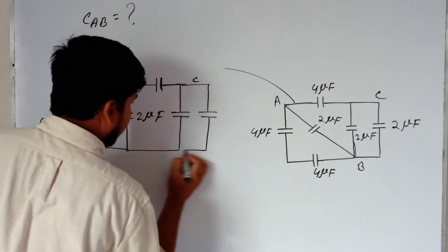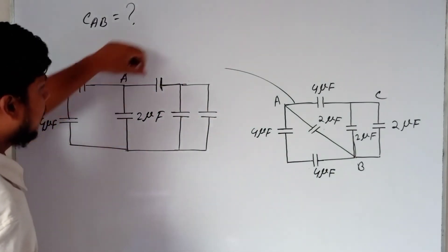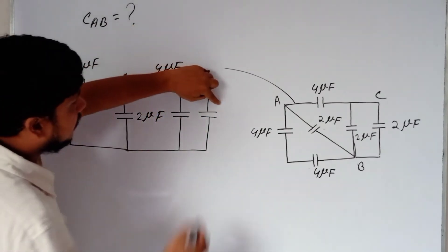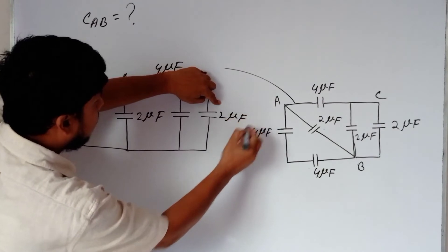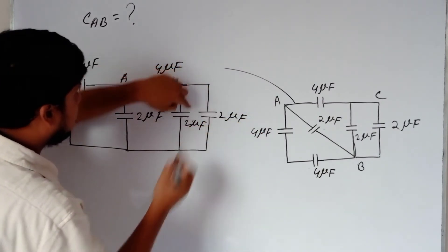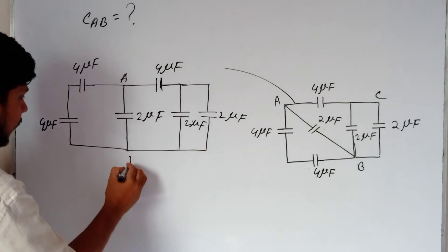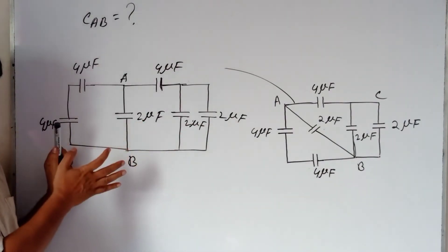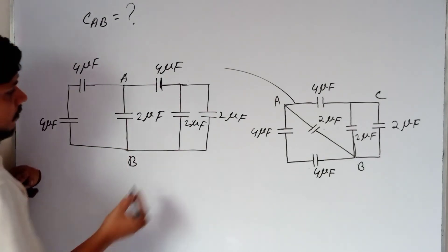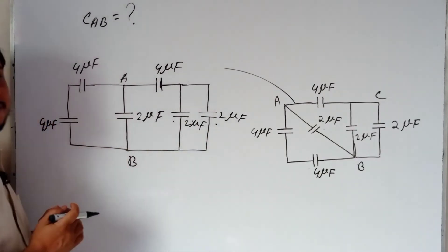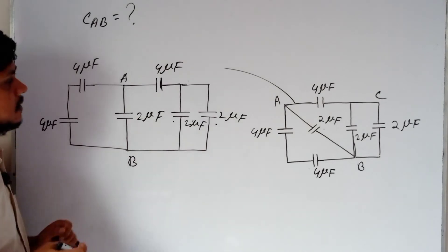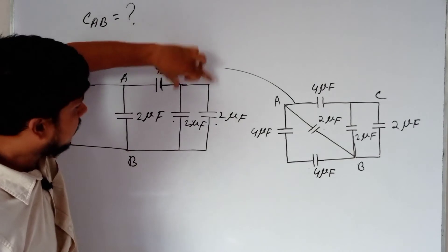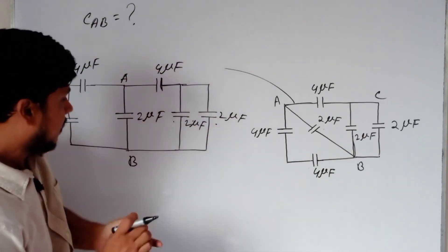Now we have: 4 microfarad, 2 microfarad, 2 microfarad, 2 microfarad, 3 microfarad, 2 microfarad, 2 microfarad from the other side — 3 microfarad, and 4 microfarad. These are the capacitor values in the circuit between points A and B.